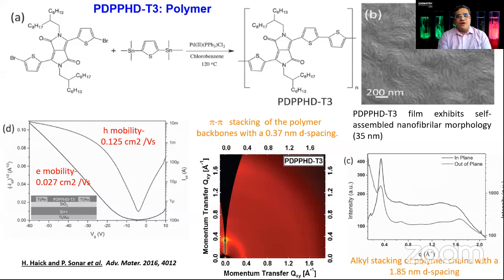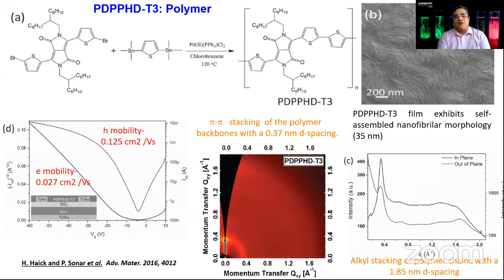I'm going to tell you a few nice examples of various applications. First was the logic circuit. Second, we utilized another DPP polymer dye for sensing application. The mobility values show both hole and electron mobility as a DPP low band gap ambipolar polymer, and we calculated the pi-pi stacking distance and got all that important information.